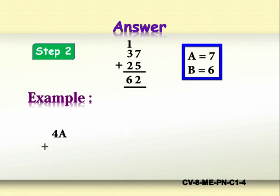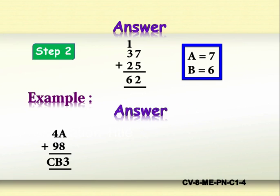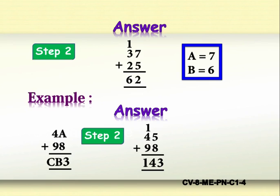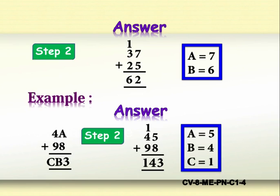Here is one more example on addition. Find the value of A in 4A plus 98 equals CB3. Step 1: A plus 8 gives 3 in the units place, which is possible only when A is 5, giving 13 with carry 1. Step 2: Replacing A by 5 and adding 45 to 98 gives 143. Hence C is 1, B is 4, and A is 5. Therefore, A equals 5, B equals 4, and C equals 1.